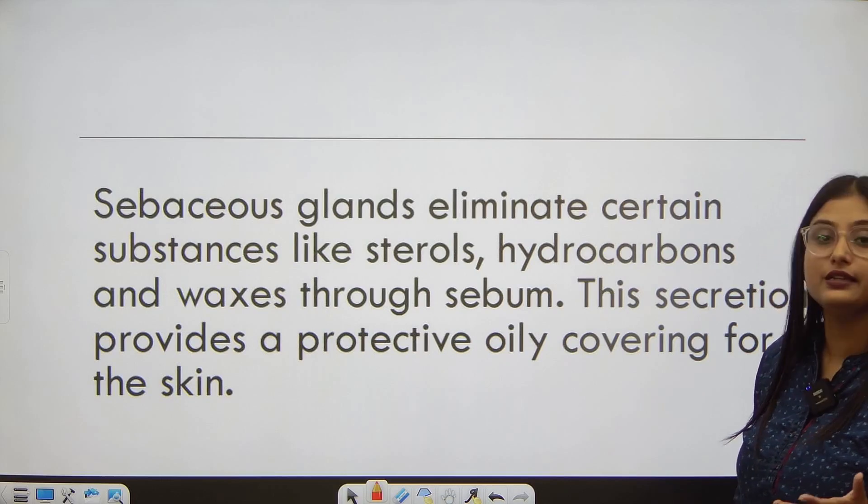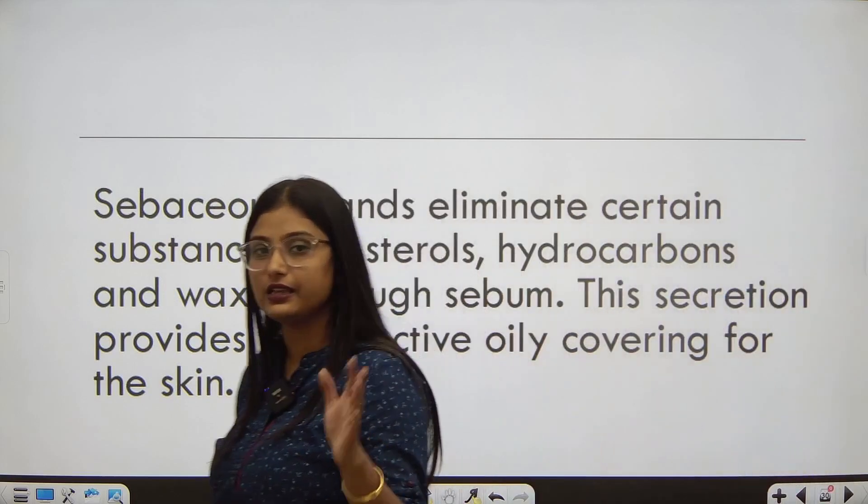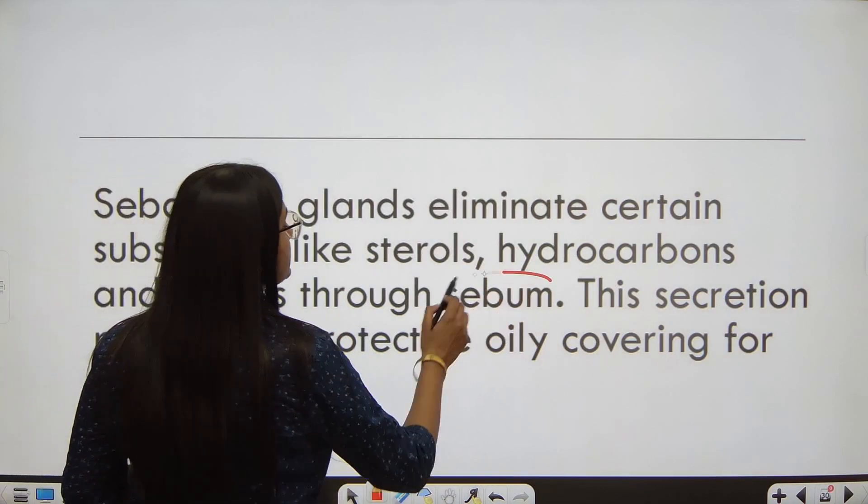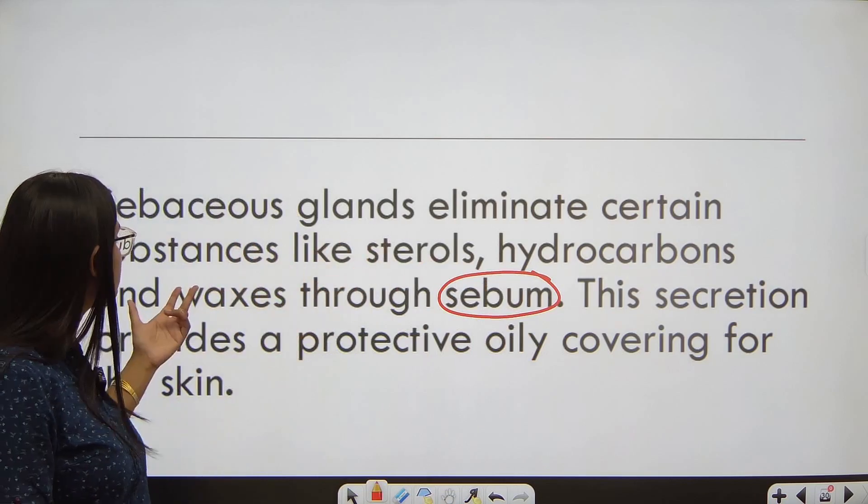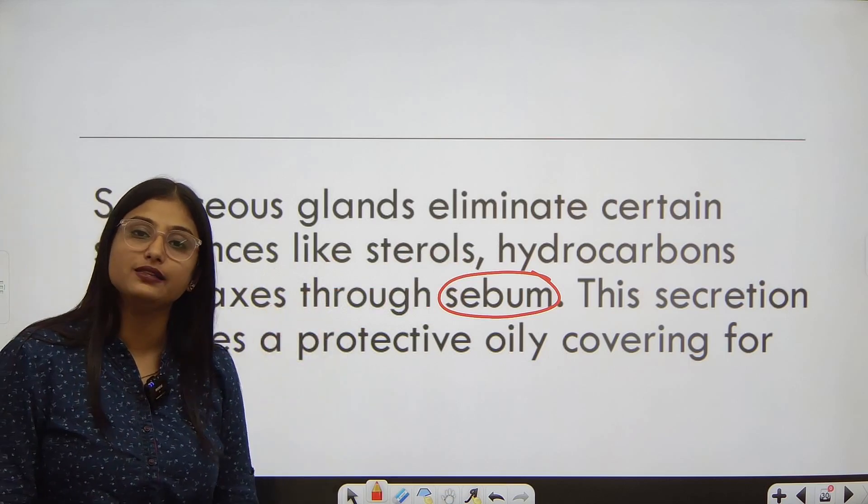Sebaceous glands eliminate certain substances like sterols, hydrocarbons, and waxes. These all eliminate through sebaceous glands, and we call it sebum, which is oil. You can note down: sterols, hydrocarbons, and waxes.